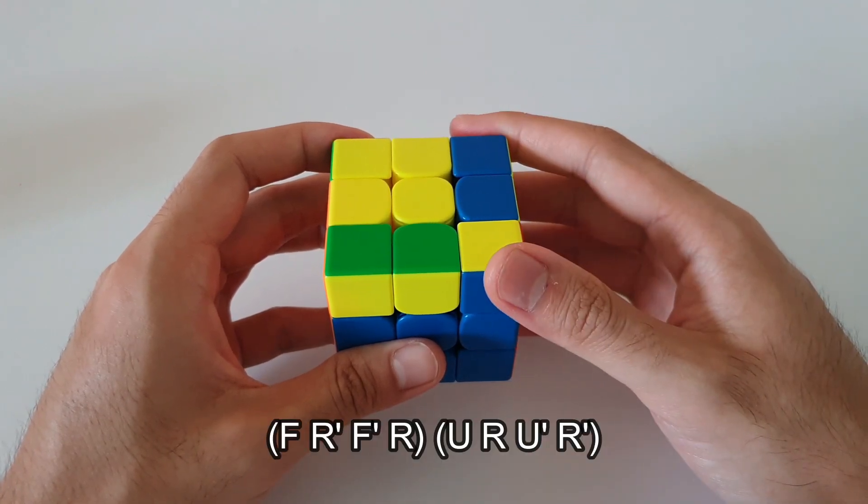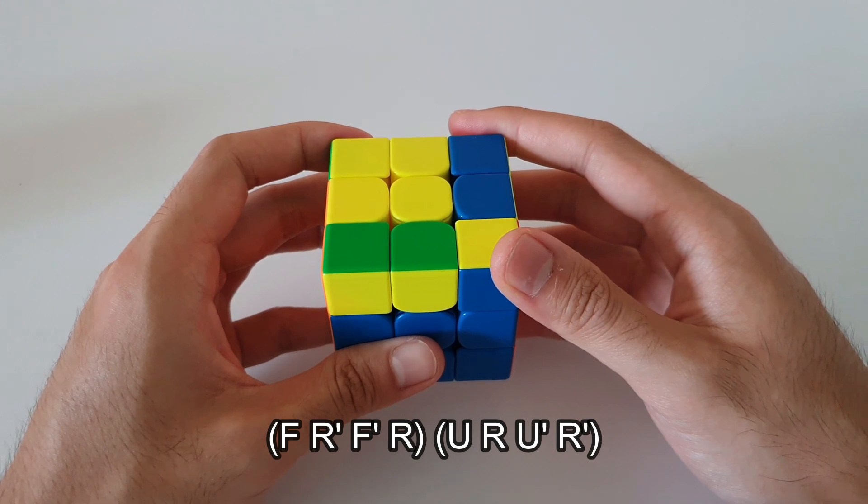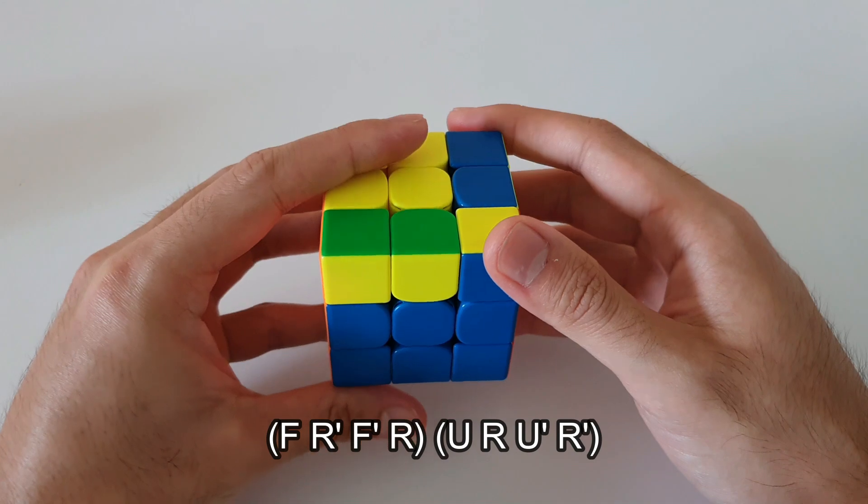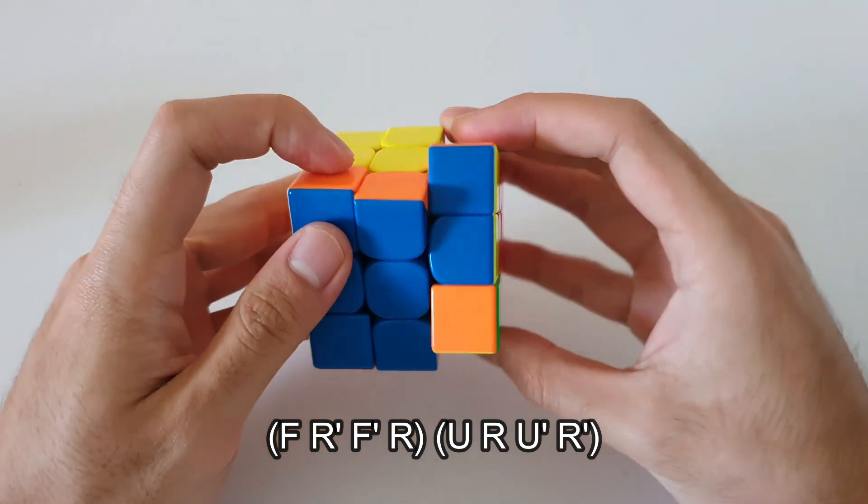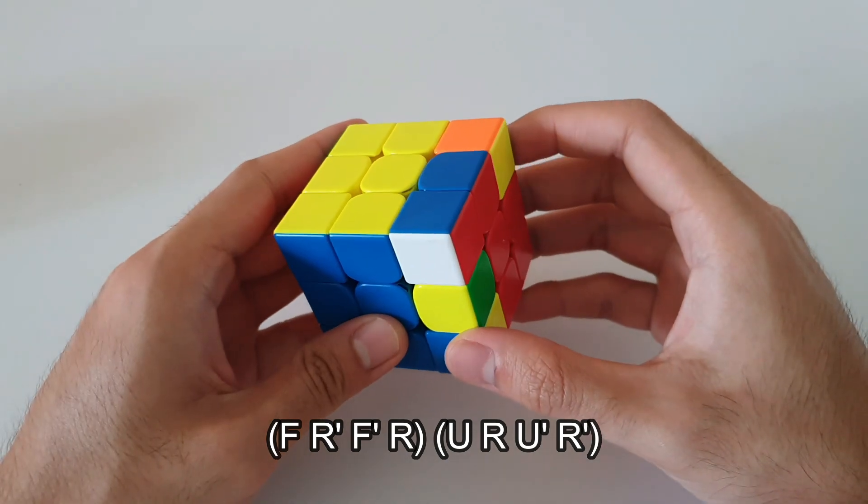So the algorithm for this case is actually nice and short, and it's quite easy to remember. So it starts off with what's called an inverse sledge. So it goes something like this. And next up, it follows up with an inverse sexy.